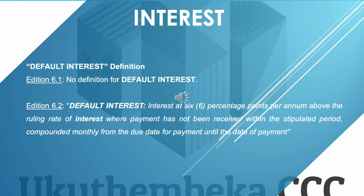Edition 6.1 does not include a definition for default interest or deal with it at all. The Edition 6.2 definition reads: 'interest at six percentage points per annum above the ruling rate of interest, where payment has not been received within the stipulated period, compounded monthly from the due date for payment until the date of payment.' The ruling rate of interest refers to the central or reserve bank rate of the country.